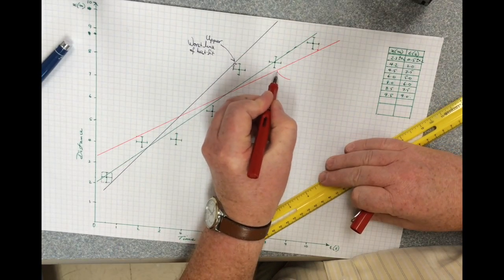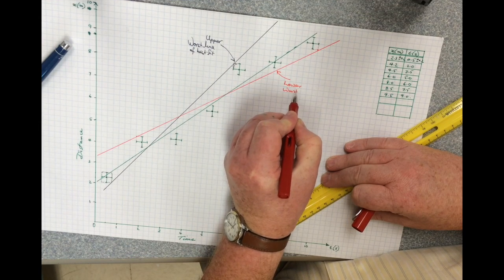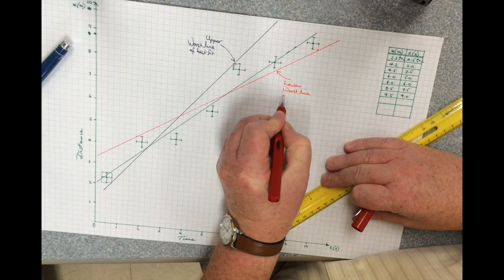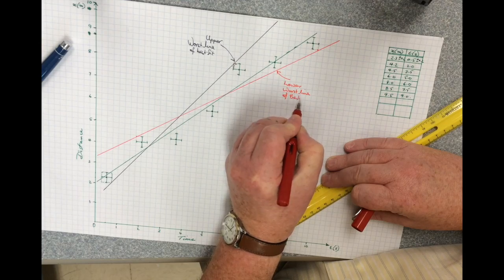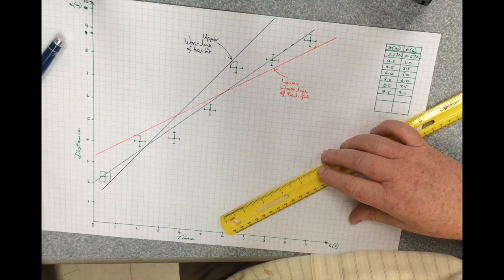And this red one over here is the lower worst line of best fit. And the green one is our line of best fit.